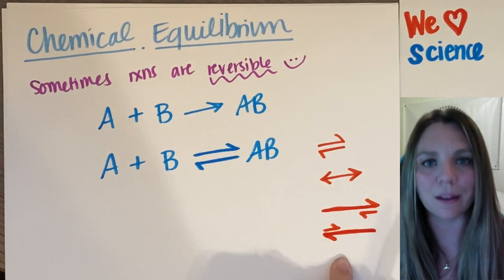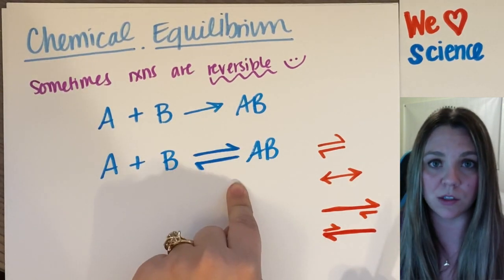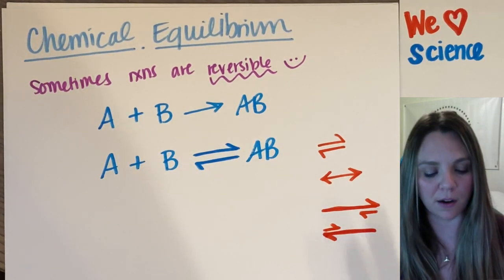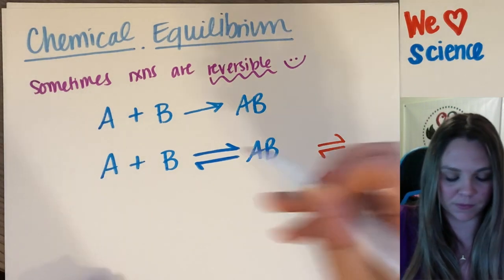So you can kind of show what's being favored if you draw your arrows like this. And I might be getting a little bit too in the weeds. But here you go. This is how you draw this situation. All right. What the heck is chemical equilibrium?